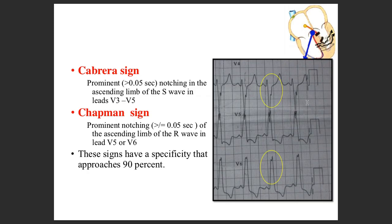You will come across a lot of those signs, even for VTs and even for myocardial infarction as well. In the ascending limb of the S wave, if there is a prominent notch — and how will you call it a significant notch? If it is more than 0.05 seconds. If you come across that, that is what is the Cabrera sign.